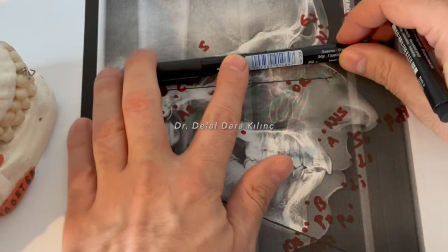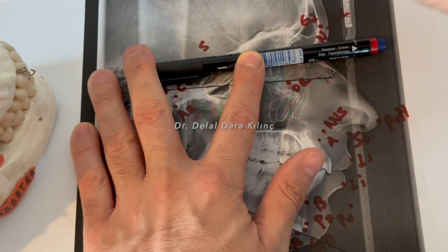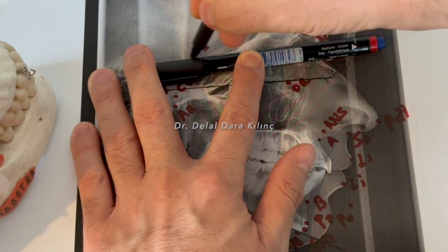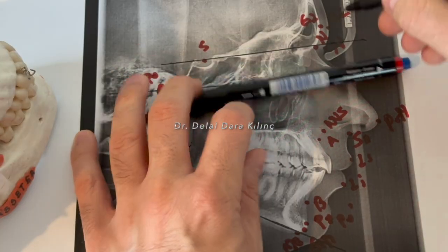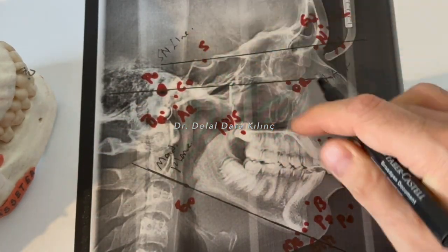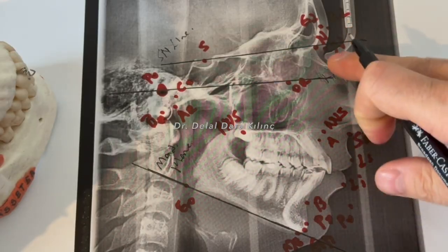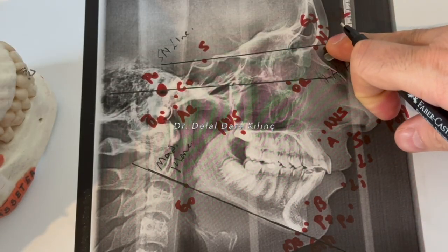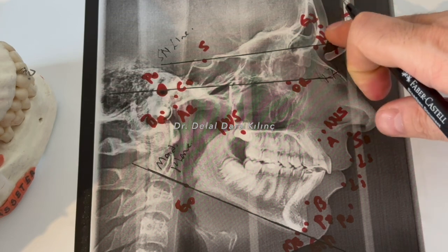And Nasion, it's here. It's the Sella-Nasion line or plane. And here you see the Frankfurt horizontal plane, the Sella-Nasion plane, anterior cranial base line or plane we call it.